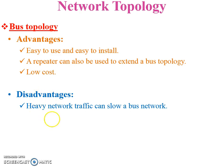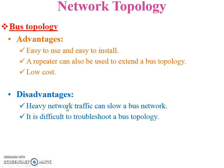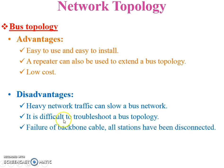Disadvantages: heavy network traffic can slow down a bus network — if more than one workstation simultaneously sends data, it generates heavy traffic, though CSMA protocol helps prevent this. It is difficult to troubleshoot; if there is a break in the backbone cable or a PC is disconnected, you cannot easily identify the failure. Failure of the backbone cable disconnects all stations. It is also difficult to add a new node to the network.